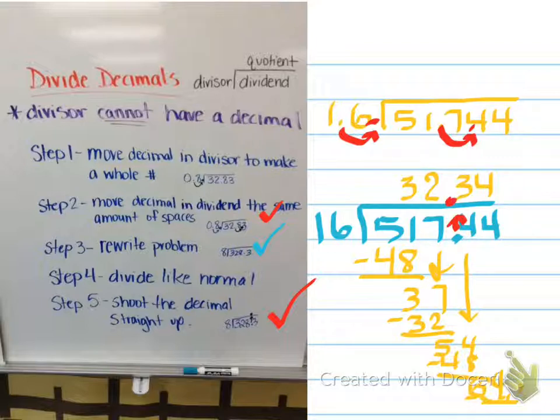And so 32.34 is my answer. And I know it seems weird because you want to put the decimal back, but no, the decimal gets shot straight up and now we're fine. Okay. How many times does 1.6 go into 51.744? It goes in 32.34 times. I know it's kind of wonky sounding, but that's exactly how it works. And I think that makes sense, right? 1.6 goes into 51, 32 ish times. I think that's reasonable.